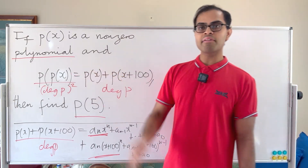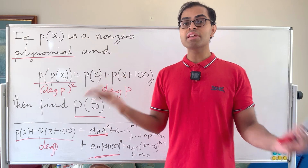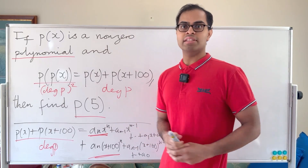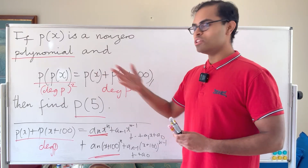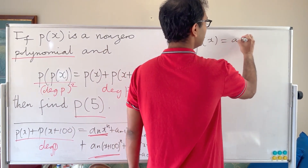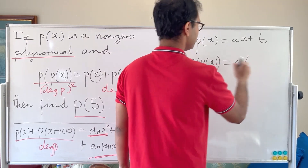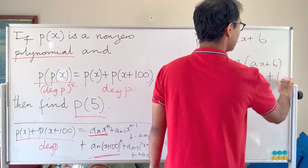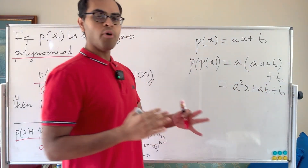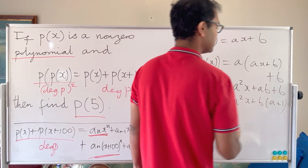If this is a multiple choice question, you could just try simple linear polynomials. So let's let p(x) = ax + b. Then p(p(x)) is found by plugging p(x) in for x: a(ax + b) + b = a²x + ab + b, which can be written as a²x + b(a+1).